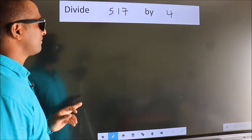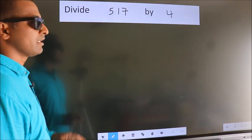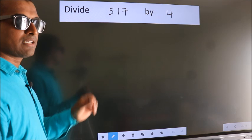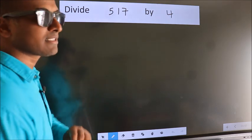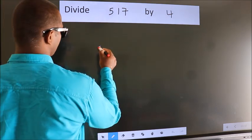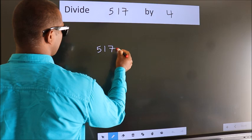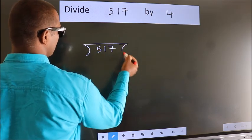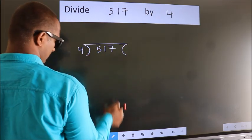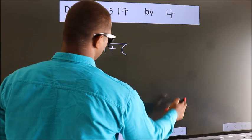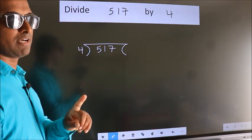Divide 517 by 4. To do this division, we should frame it in this way. 517 here, 4 here. This is your step 1.